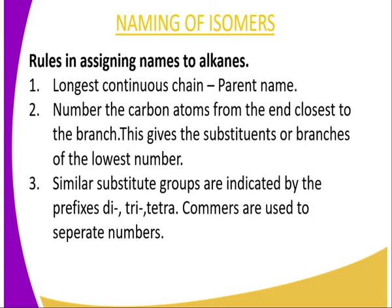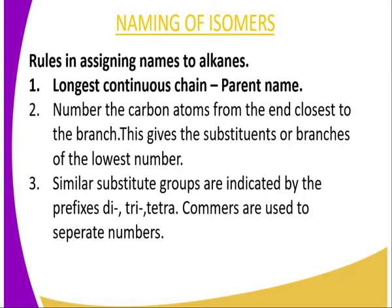Rule number one: count the longest continuous carbon chain, and that will give us the parent name. So if the longest carbon chain has three carbons, the parent name becomes propane. If there are four, the parent name becomes butane. That is rule number one — count the longest continuous carbon chain, which will give you the parent name.